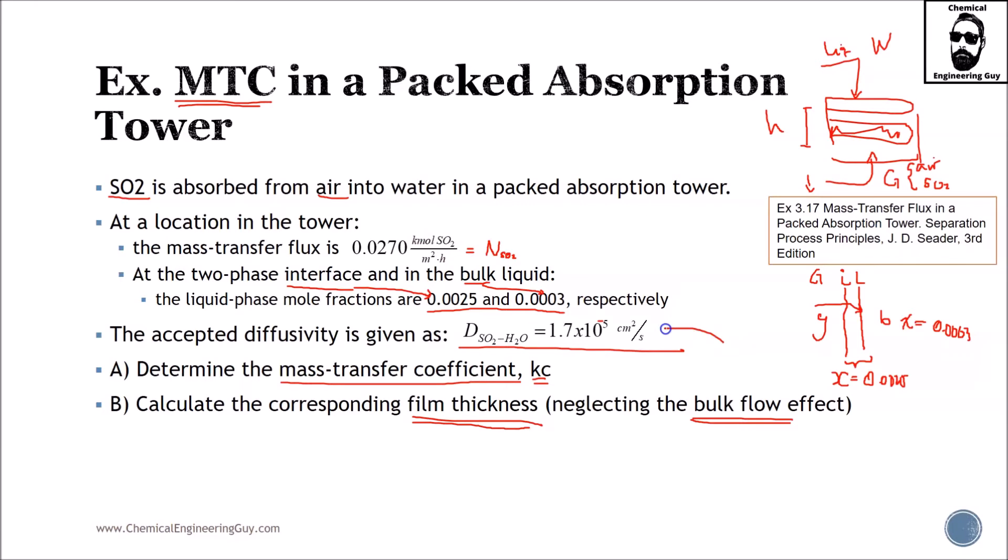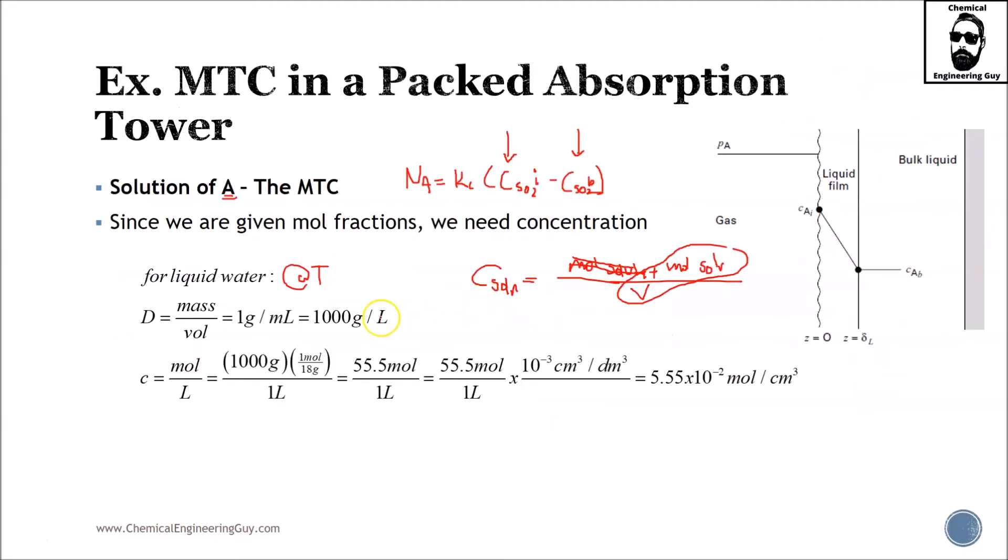So you can either go and check out on your books and reference at what value of diffusivity of sulfur dioxide in water we have this diffusivity. Typically, they would tell you 25, 15 Celsius, I don't know. Or we can assume that because this is water, the density is not going to change that much.